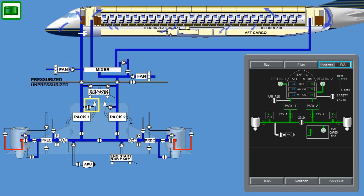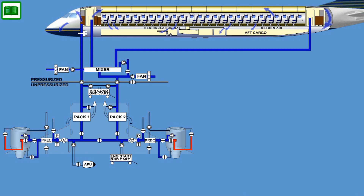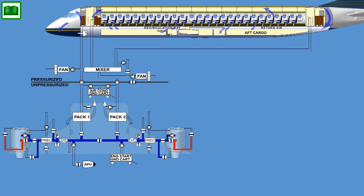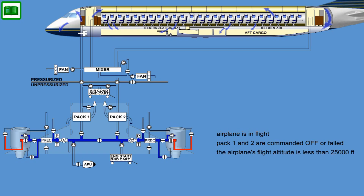The Pack-1 Ram Air Ventilation consists of a ventilation valve installed in the emergency Ram Air ducting that connects the Ram Air duct to the Pack-1 outlet ducting. The emergency Ram Air valve is commanded open any time the airplane is in flight and Pack-1 and Pack-2 are commanded off or failed and the airplane's flight altitude is less than 25,000 feet.